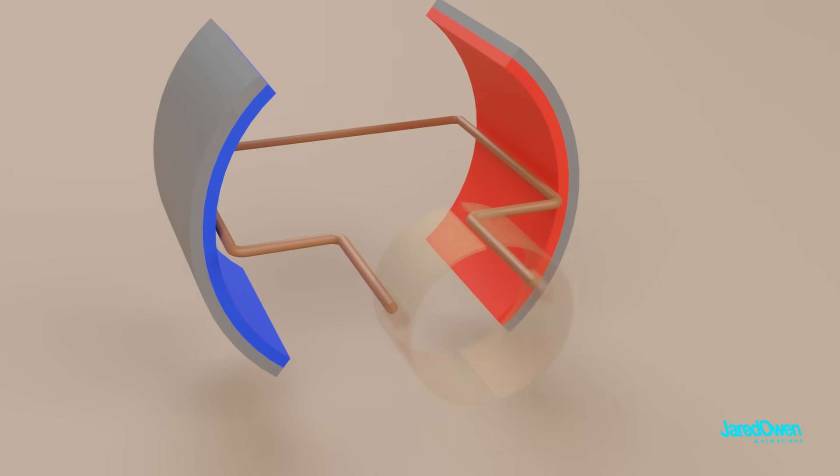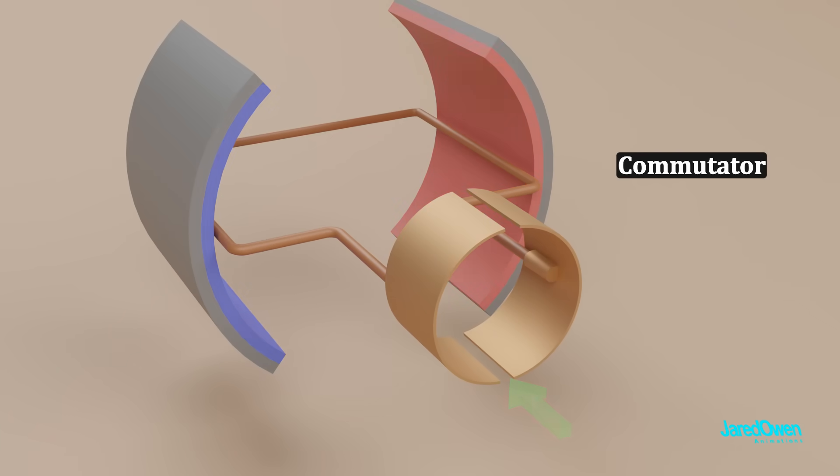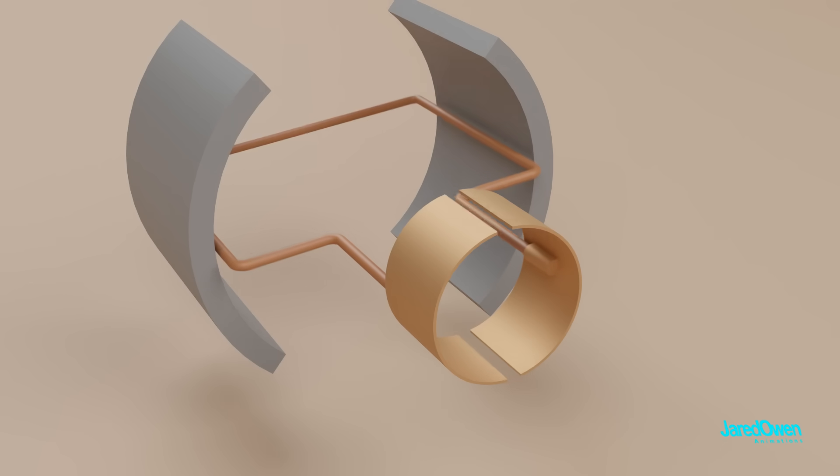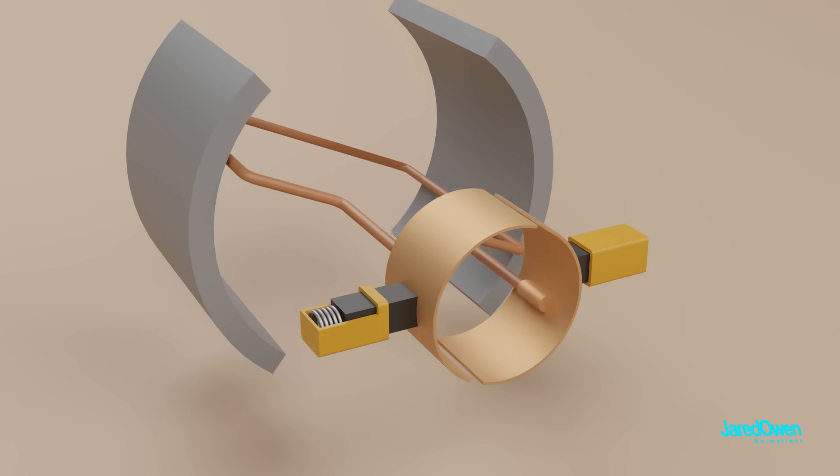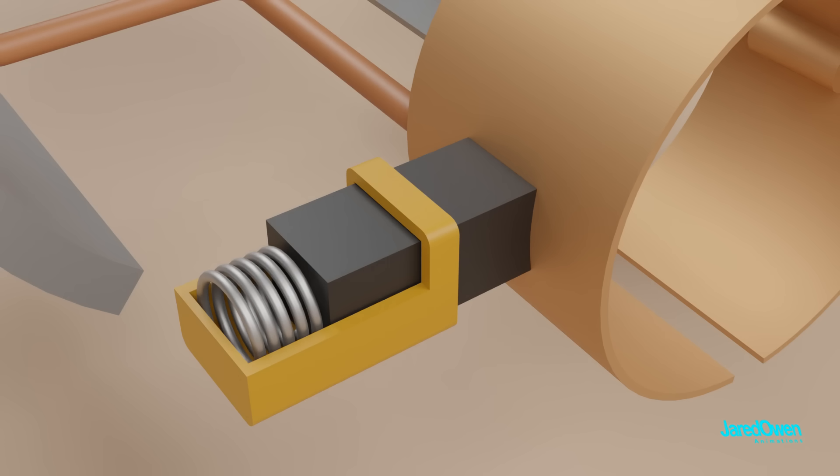We need to add something to the armature called a commutator. It's a ring with gaps on the opposite sides. The commutator will spin along with the armature. Now we connect the circuit with two brushes on the side. These brushes will slide along as the commutator spins, and they are spring loaded so that they always maintain contact.